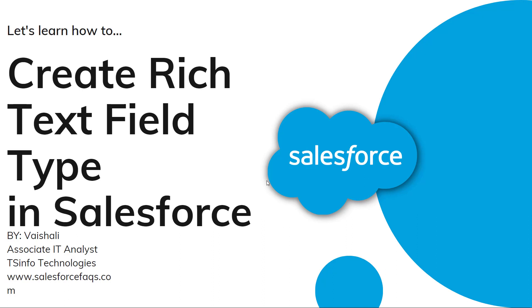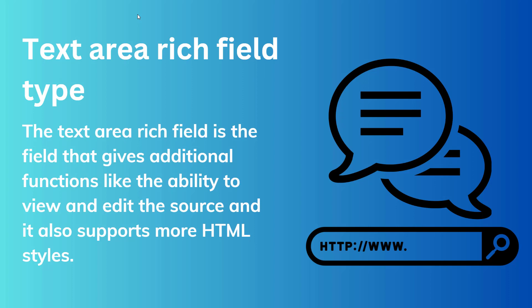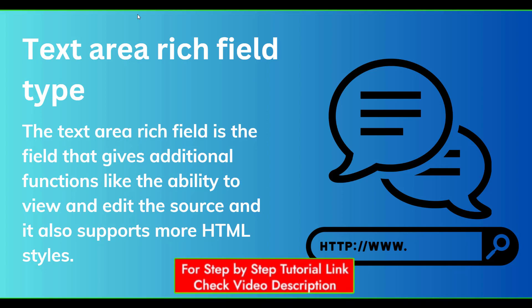Before we proceed to learn how to create it, we will first discuss what is text area rich field type in Salesforce. The text area rich field type is a type of field that permits the user to enter formatted text and add images and links. We can enter up to 131,072 characters on separate lines, and we can create a rich text field on any object. This field gives additional functionality like the ability to view and add source code, and it also supports more HTML styles.